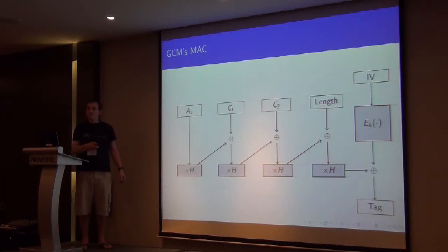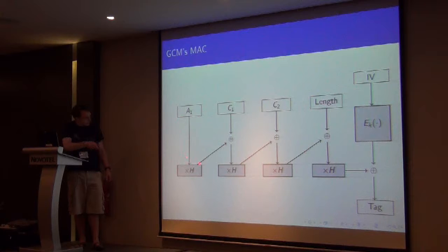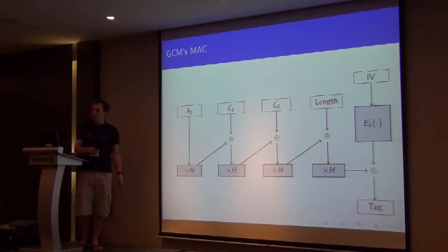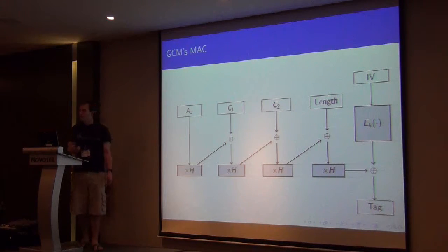And then this multiply XOR and multiply XOR is the evaluation of the polynomial. And the right-hand side is the encryption to give us the MAC.